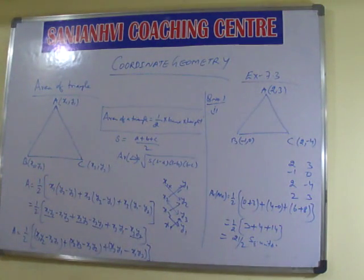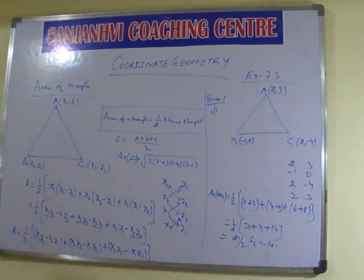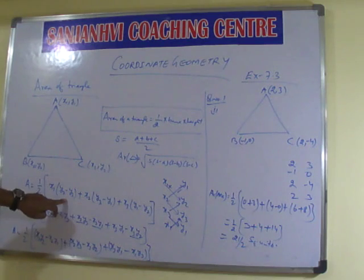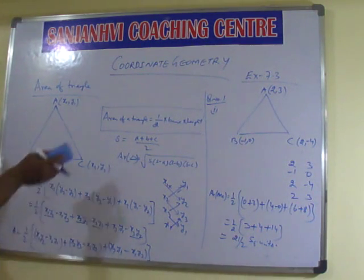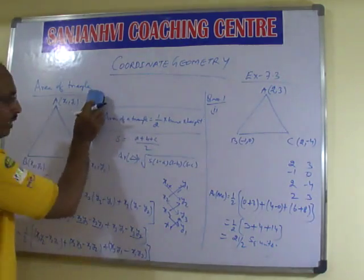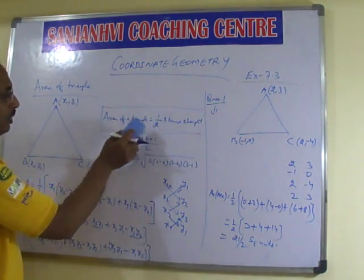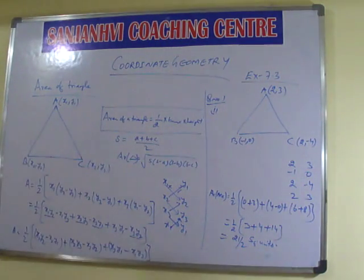Yes sir, 21/2 square units will be the area of this particular triangle. Because we do not know the unit, we write square units. Do you want to solve by this method? Yes sir. Very good, let us solve. Note it now.